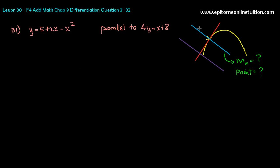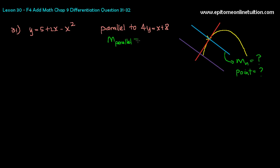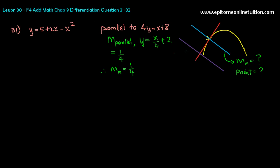The blue line — the normal — is parallel to another line, so that tells you the gradients are equal. Find the gradient of this parallel line. Rearranging 4y = x + 8, y equals x over 4 plus 2. So M of the parallel line is equal to 1 over 4. And therefore, M of the normal is also 1 over 4 because they are parallel. Problem number one solved — you found the gradient.